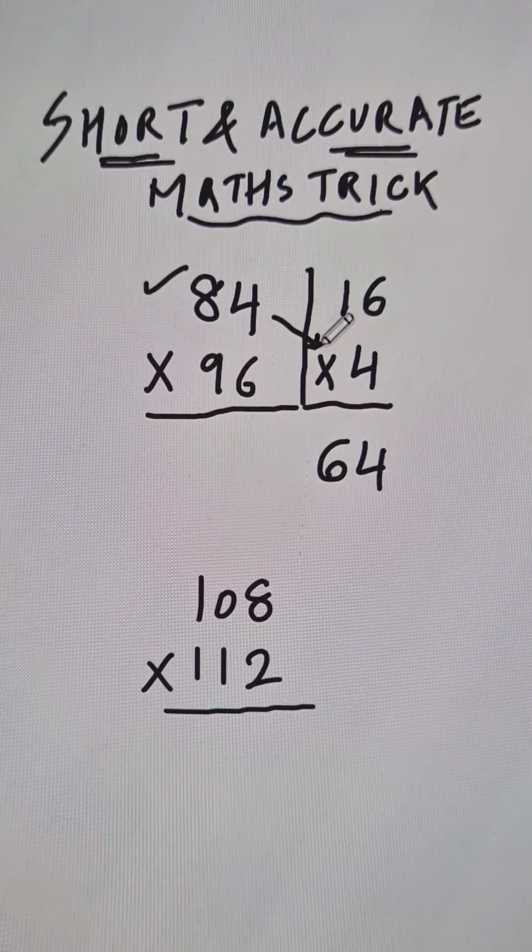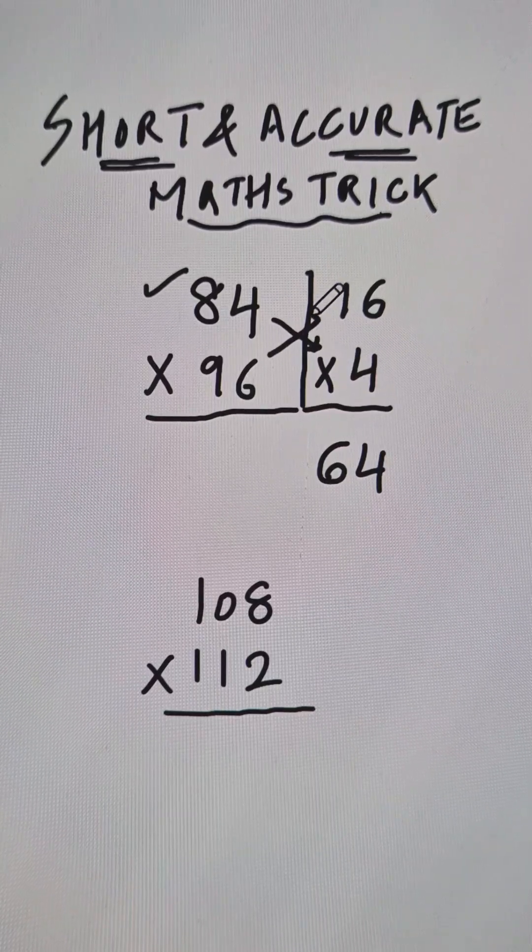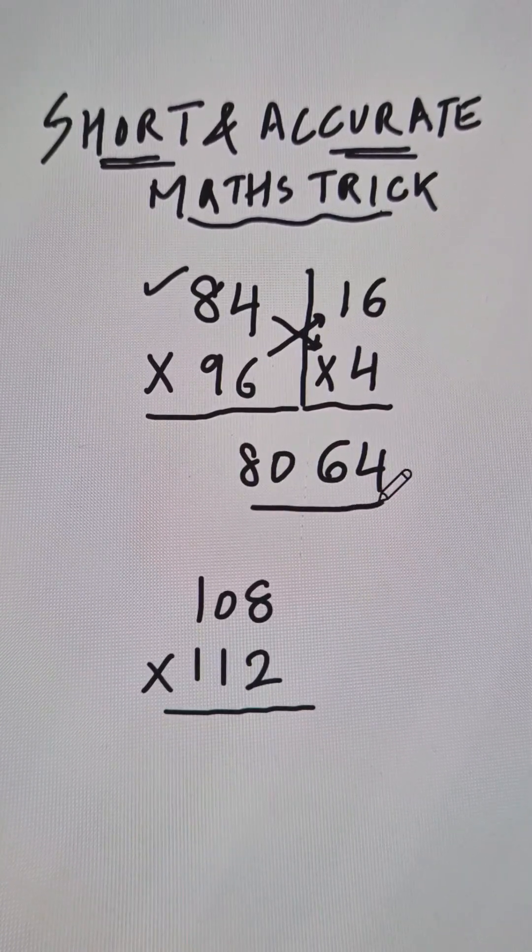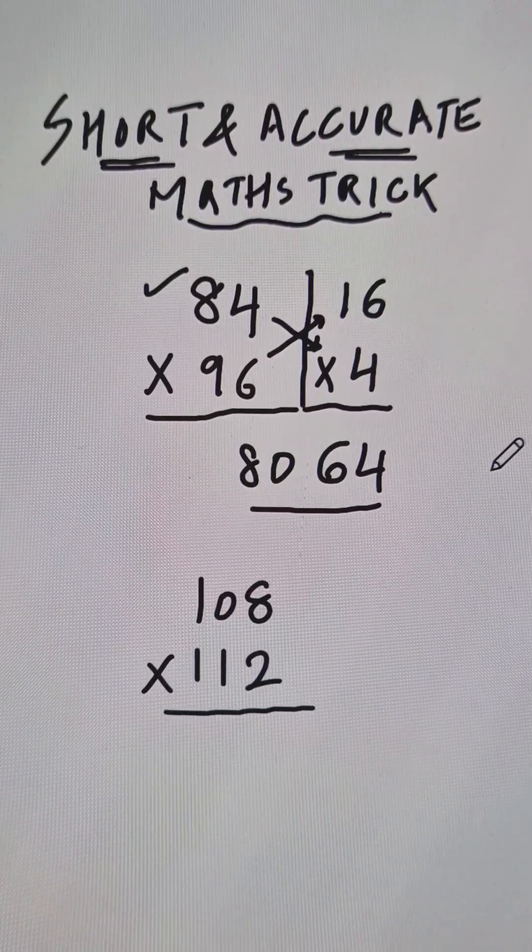Now either subtract like this, 84 minus 4 is 80, or subtract like this, 96 minus 16 is 80. Pick up the calculator and check your answer: 84 times 96 will be 8064.